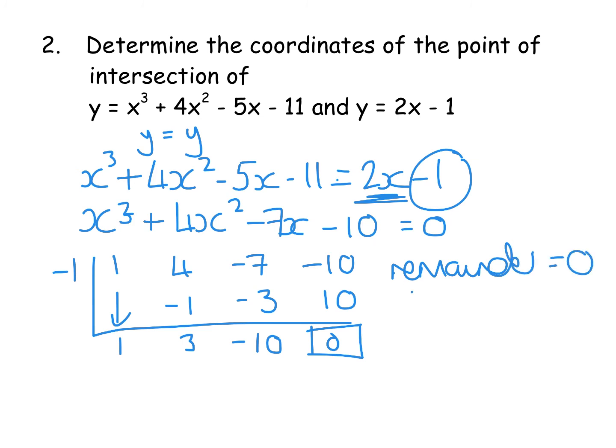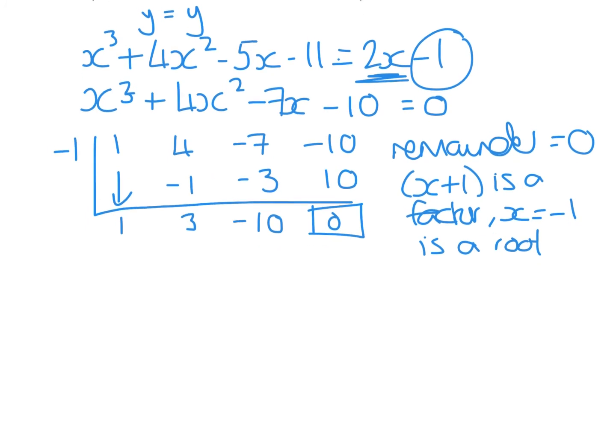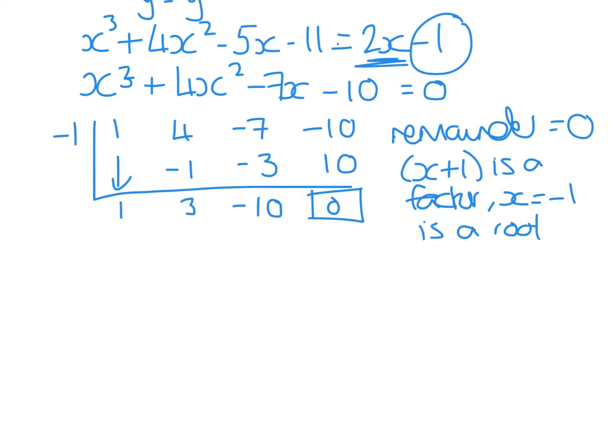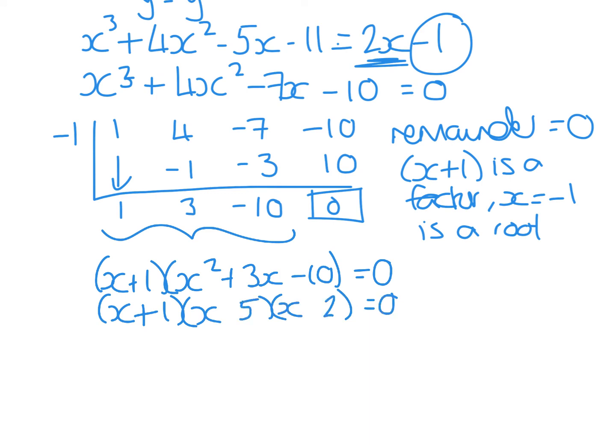So remainder = 0. Excuse my writing there. So x + 1 this time is a factor. And x = -1 is a root. Okay, and as I said, I just always write it for good measure. Right, so what I need to do is now we need to factorize. So our first factor was x + 1. Your quotient is x² + 3x - 10. It all = 0. Simple trinomial. Numbers that multiply to 10 and add to 3. It's definitely a 5 and a 2. To get positive 3, the 5 is positive, the 2 is negative. Solve each of them. We have -1, -5, and 2.